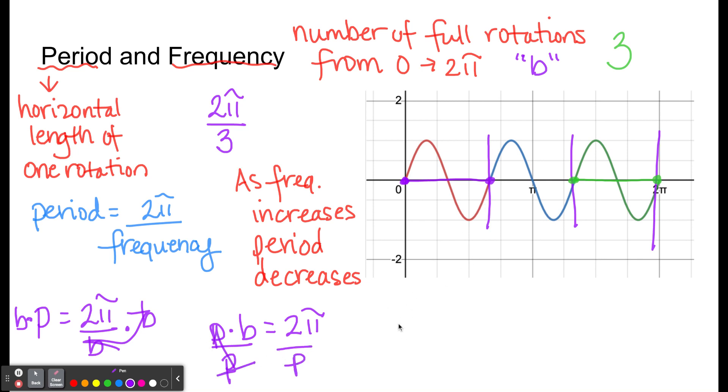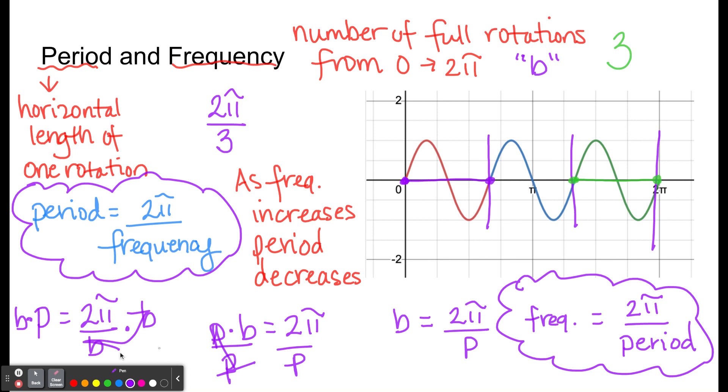So what I have now is another equation that's also important, which is that b is equal to 2π divided by p. Or frequency, which sometimes we need to find from a graph, is equal to 2π divided by the period. So these two formulas, that we will use a lot when writing equations, can go in both directions because that is how inverse variation works.